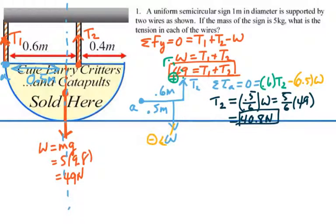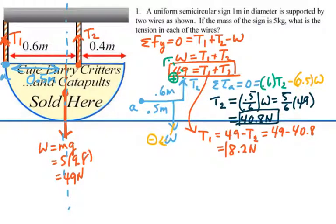For T1 we can use this equation up here. T1 is going to equal 49 minus T2 so that's going to be 49 minus 40.8 which would be 8.2 newtons. So those are our two tension forces, 40.8 and 8.2.